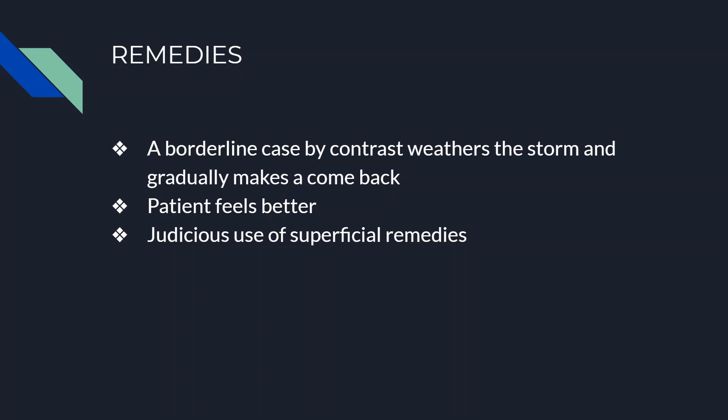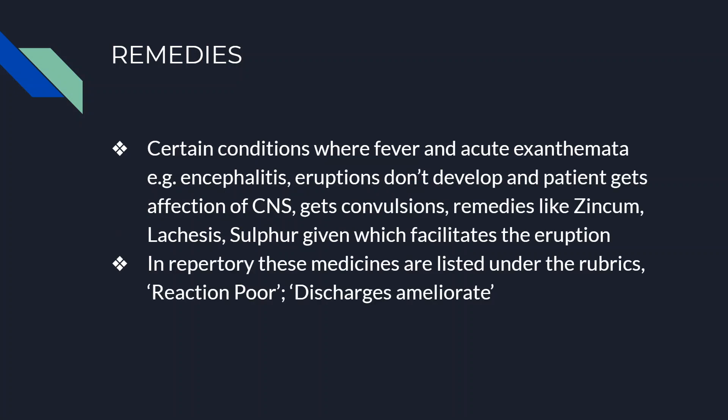Prolonged aggravation but slow improvement. Certain conditions where fever and acute exanthemata — for example, encephalitis — eruptions don't develop and the patient goes into affection of the central nervous system with convulsions. Then remedies like Zinc, Lecithin, and Sulfur are given, which facilitate the development of eruptions. In the repertory, these medicines are listed under the rubric called 'reaction poor where discharges ameliorate.'